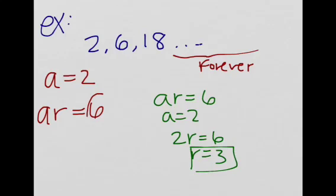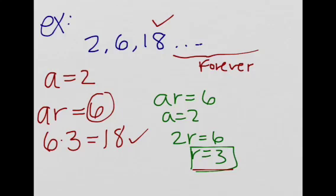We take 6, and then we multiply it by the common ratio, 3. So this is equal to 18. And does this work? Yes, it matches. So this is a geometric sequence. So basically we're multiplying by 3 each time, okay?